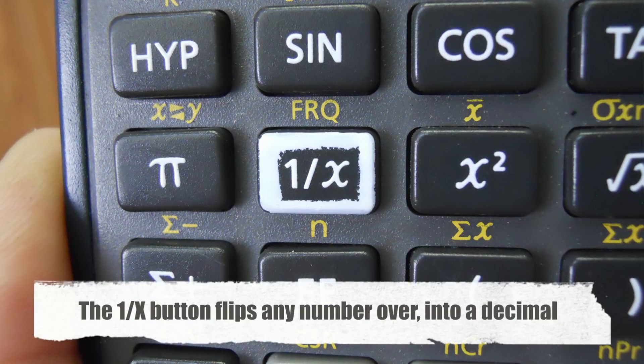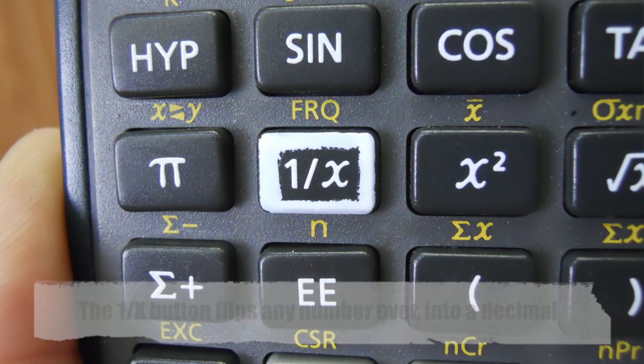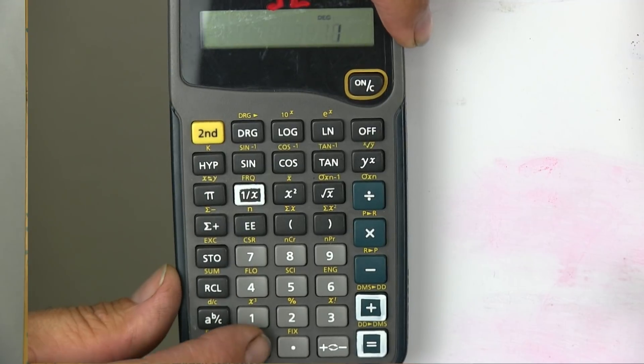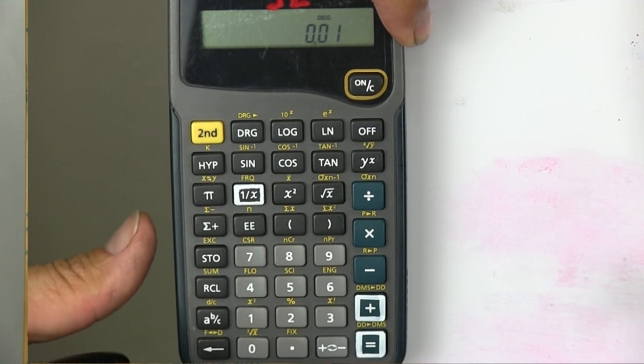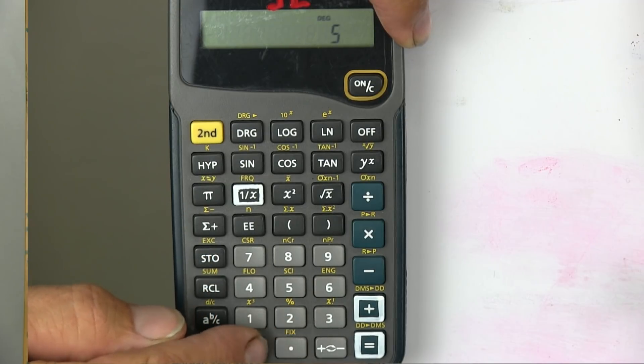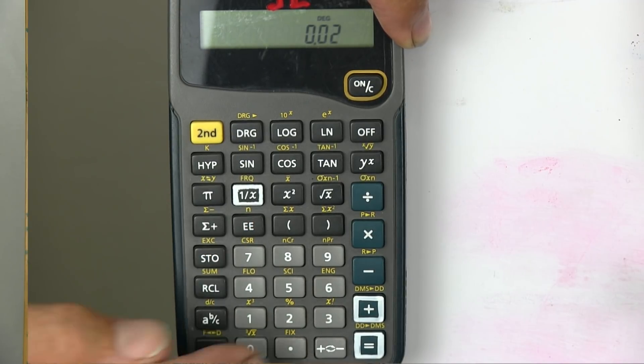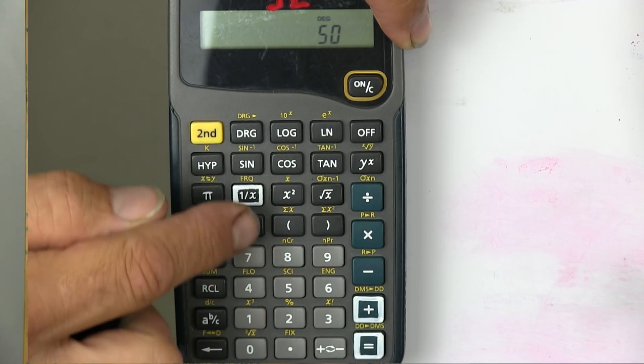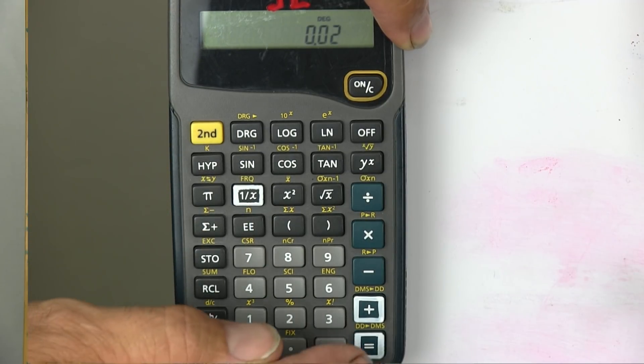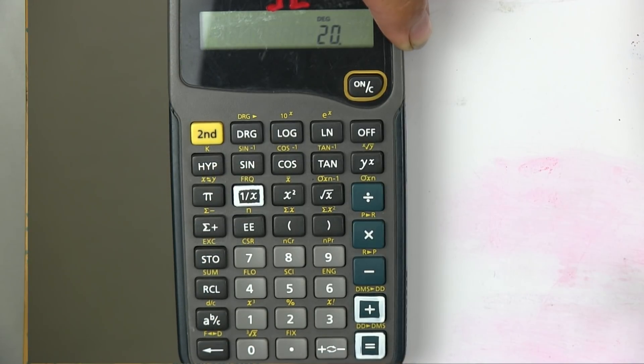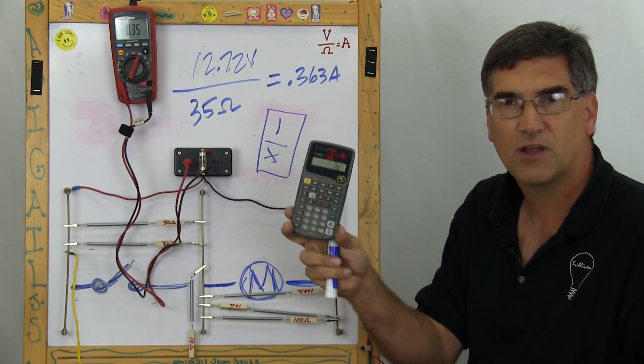So instead of having to do one over x, one over x, all they have to do, for example, if I want to put 100 ohms in parallel with something else, I type in 100 and hit one over x, then I hit plus. And let's say I want to put it in parallel with 50. So 50, one over x, plus. And then I want to put it in parallel with another 50, one over x equals. And then I hit one over x again, and I get 20 ohms.